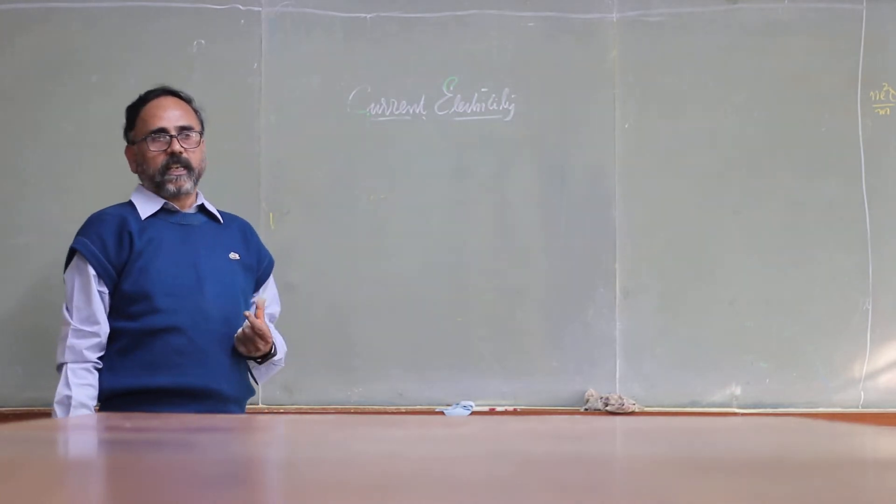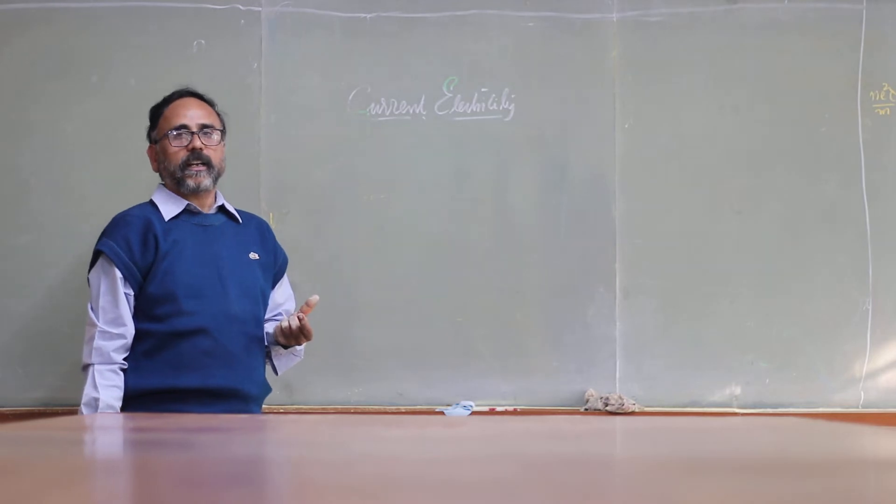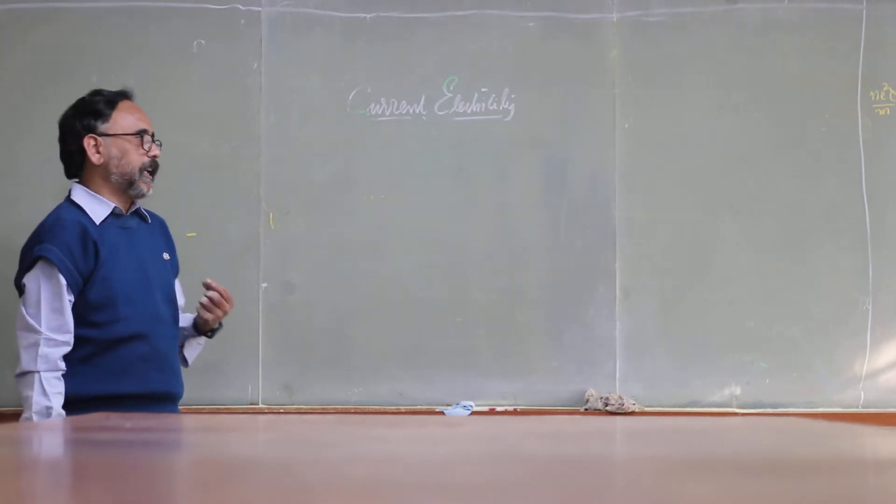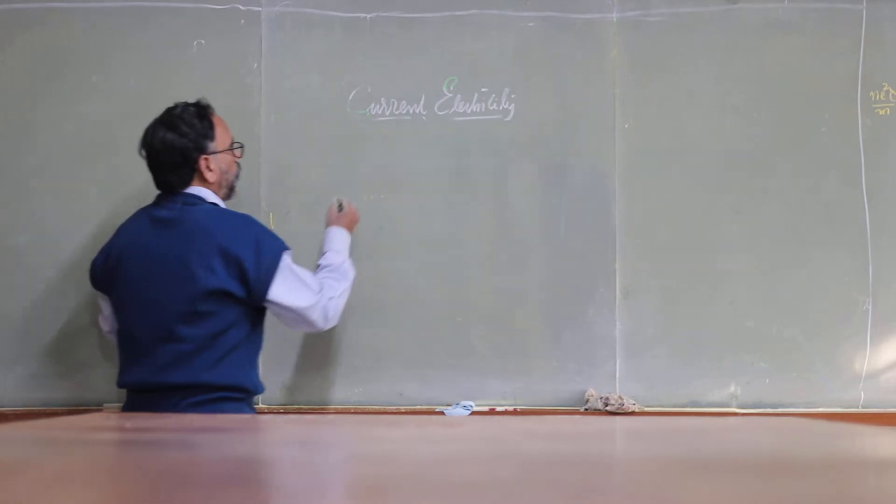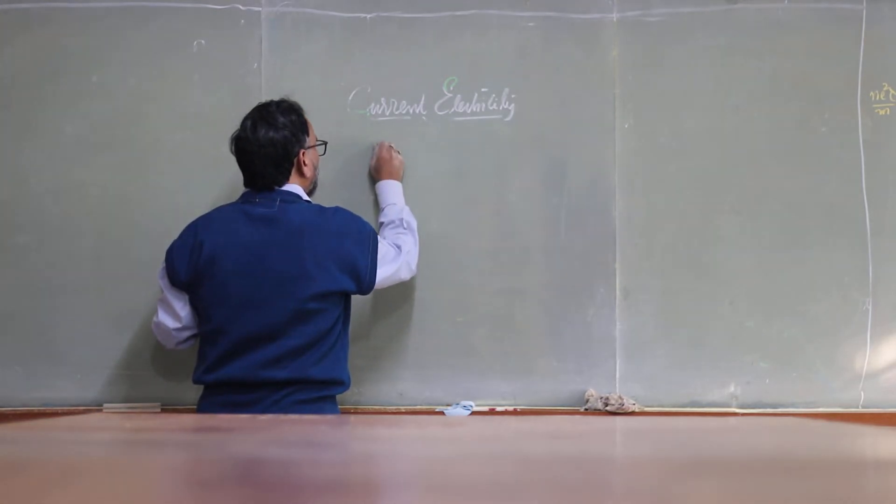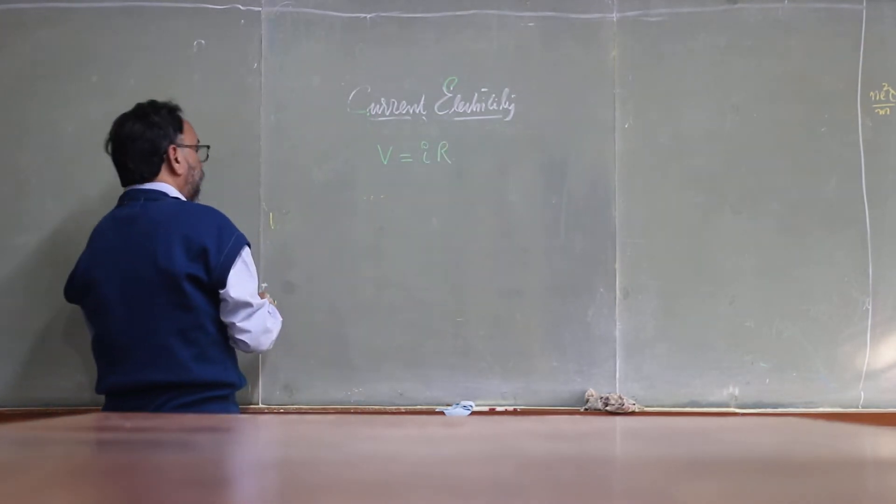the potential difference across any two points in the conductor is directly proportional to the length of the conductor. That we have to derive. We know that V equals I R. This is Ohm's law.